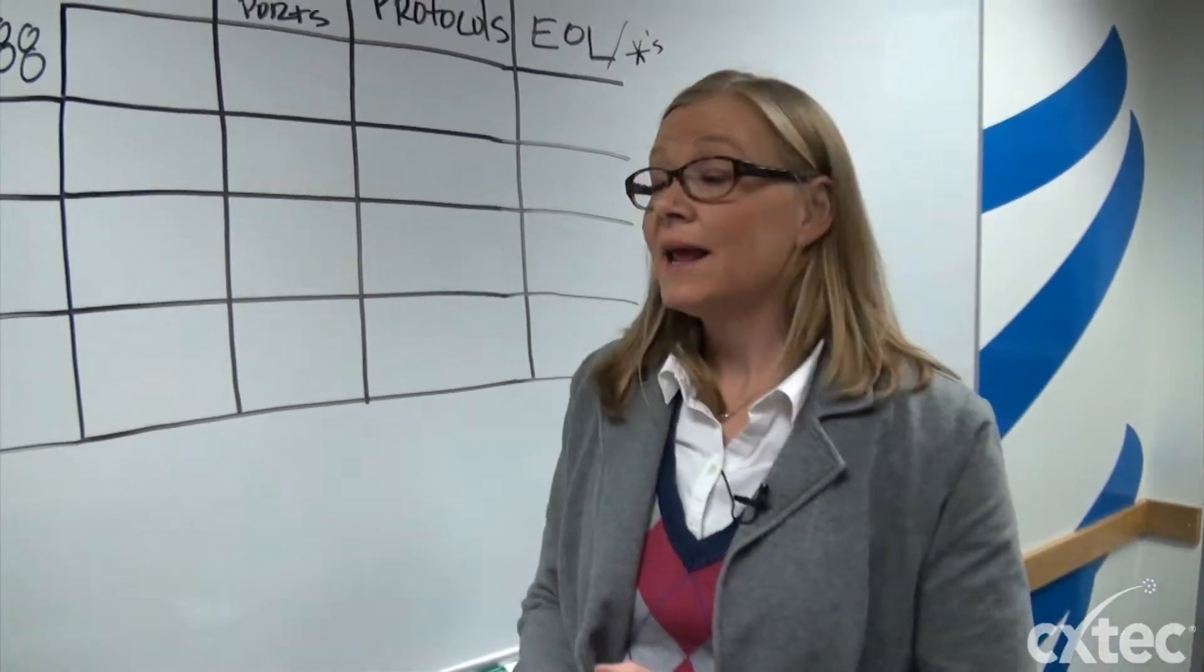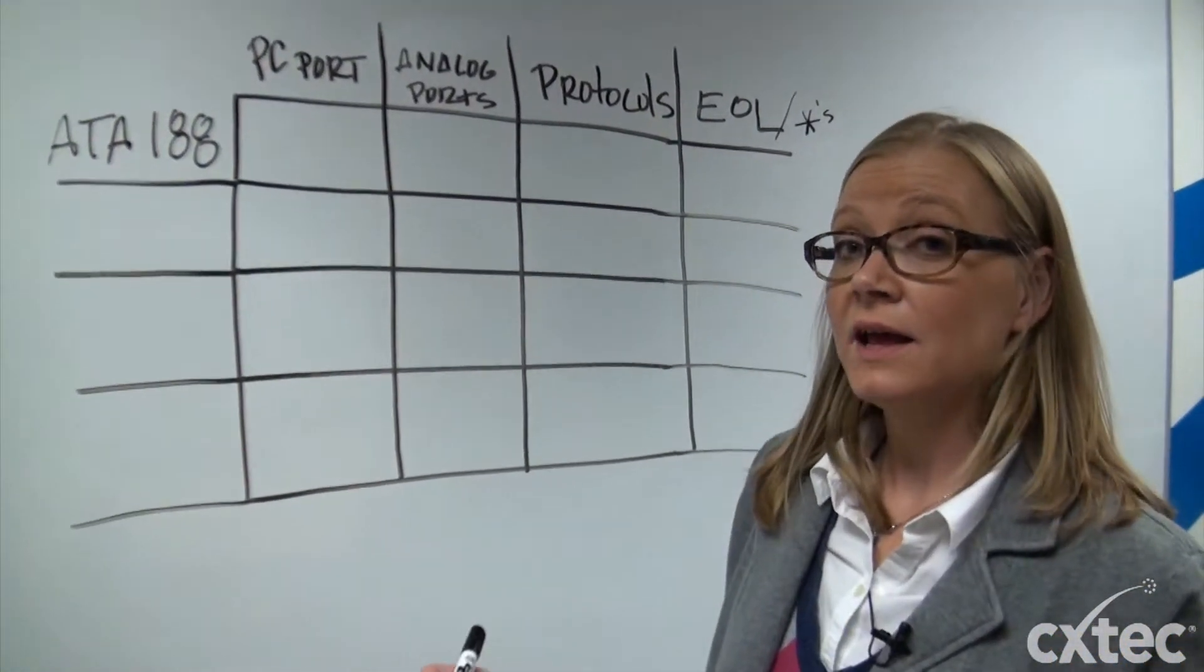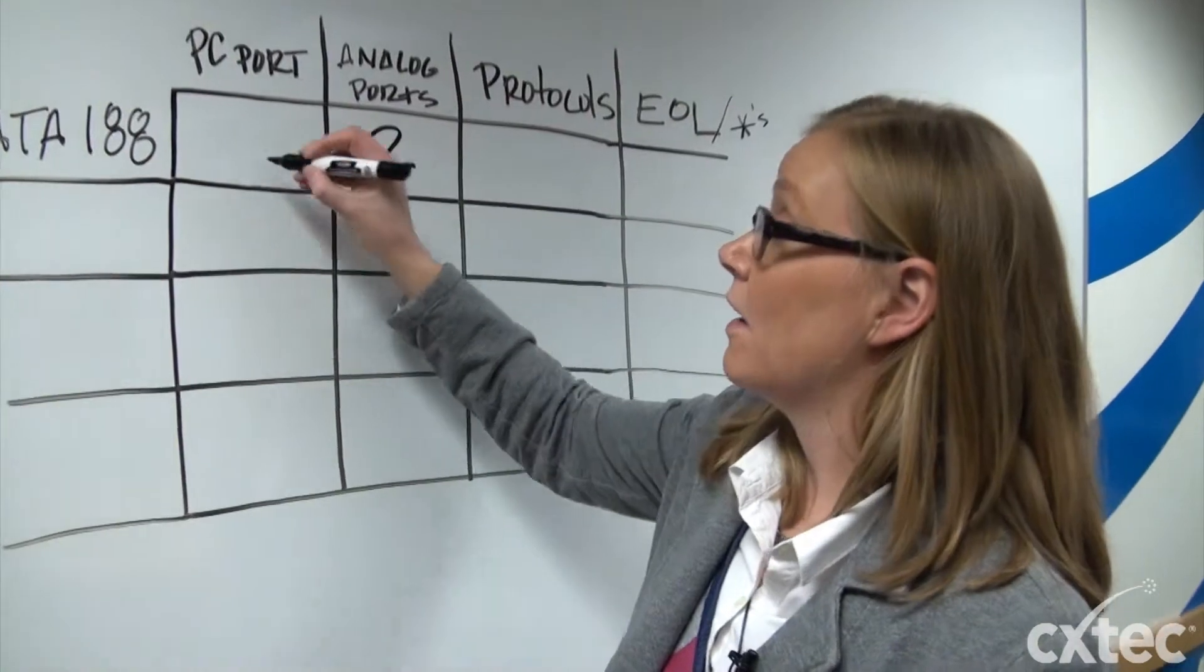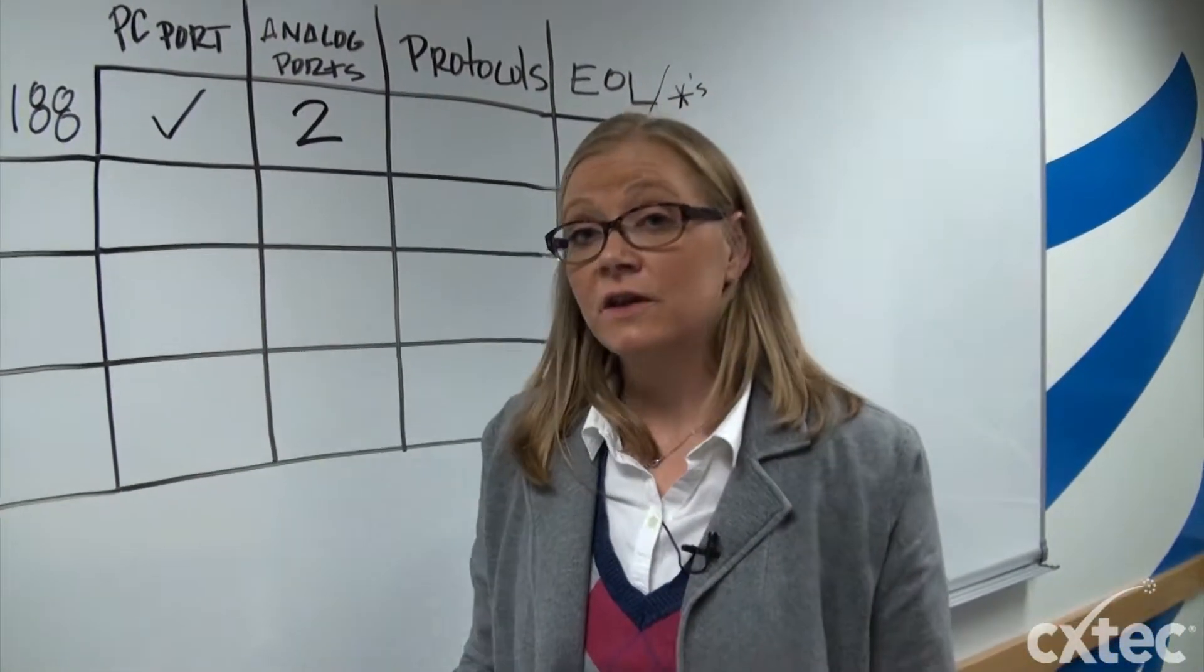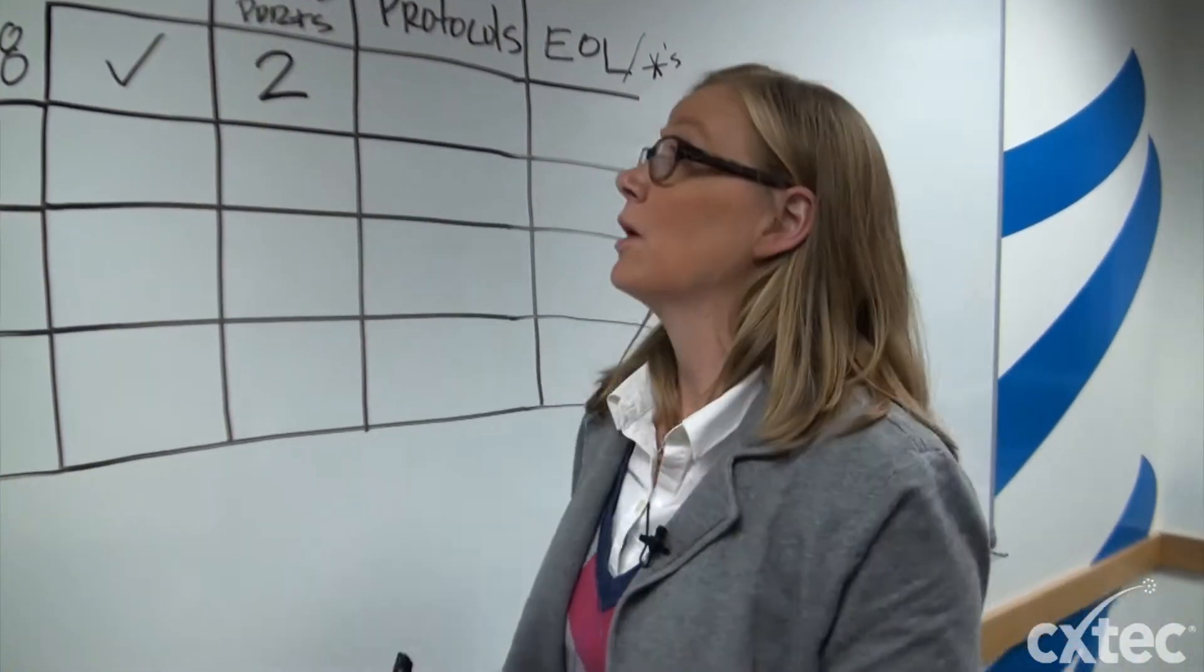The very first Cisco ATA was a 188. That 188 actually had a PC port on it in addition to two analog ports. That meant that you could actually connect a PC through the ATA and into your network.